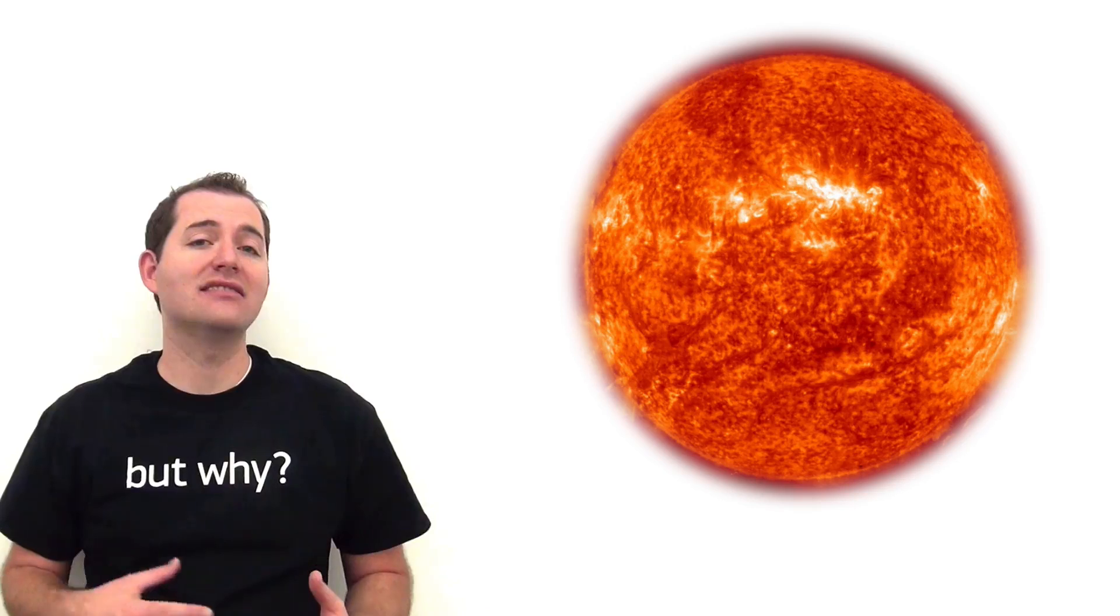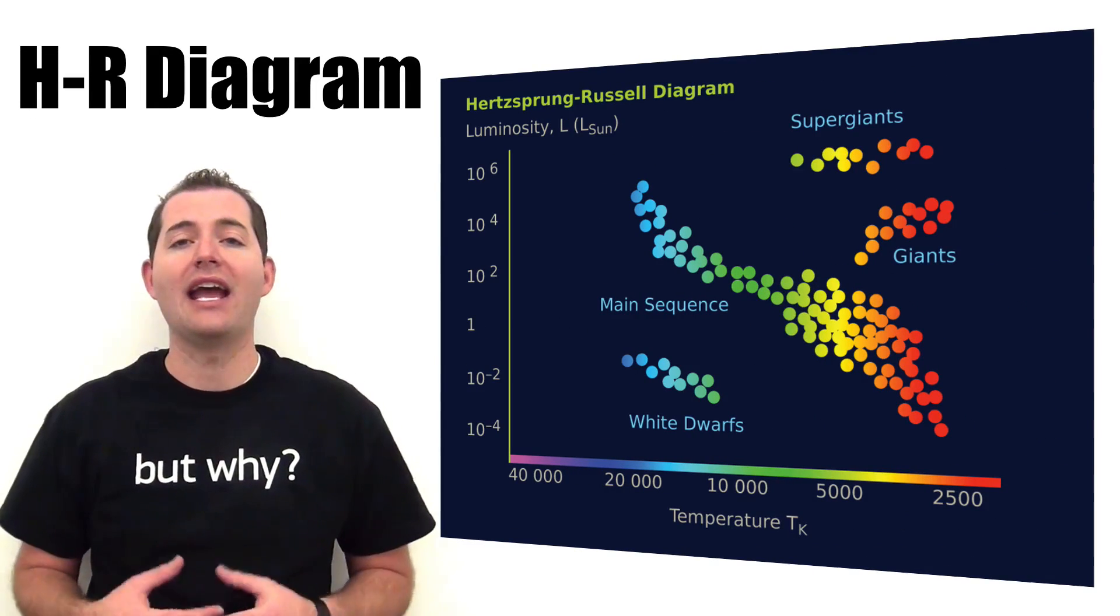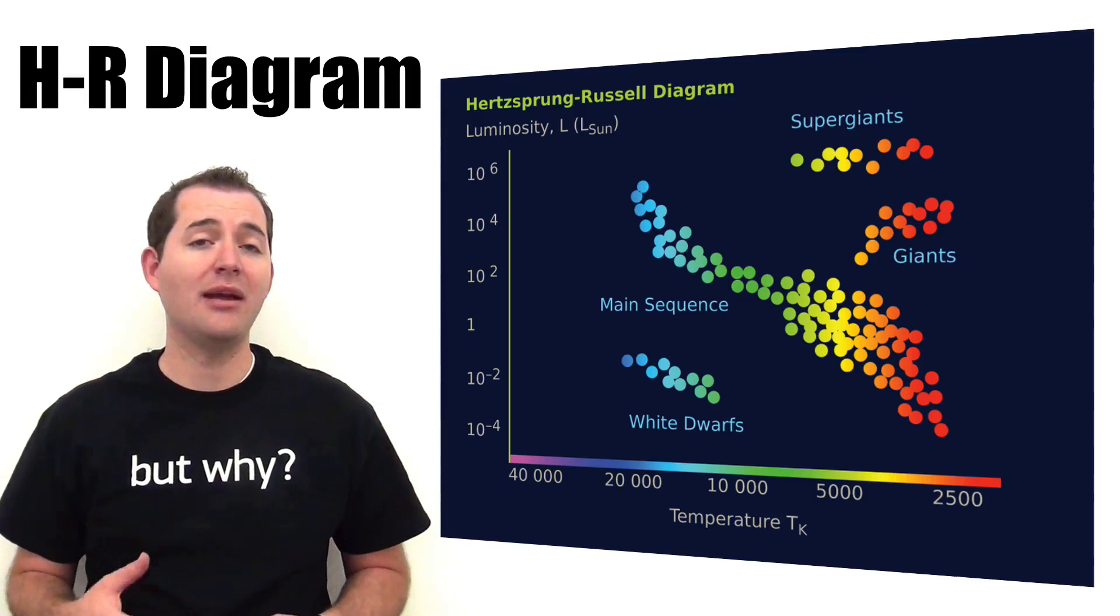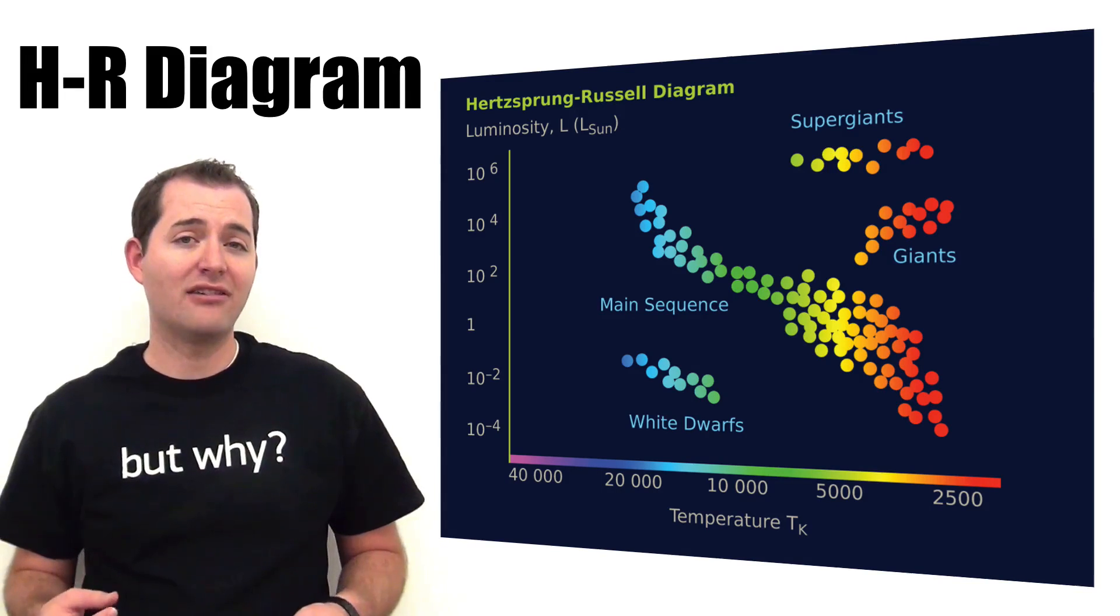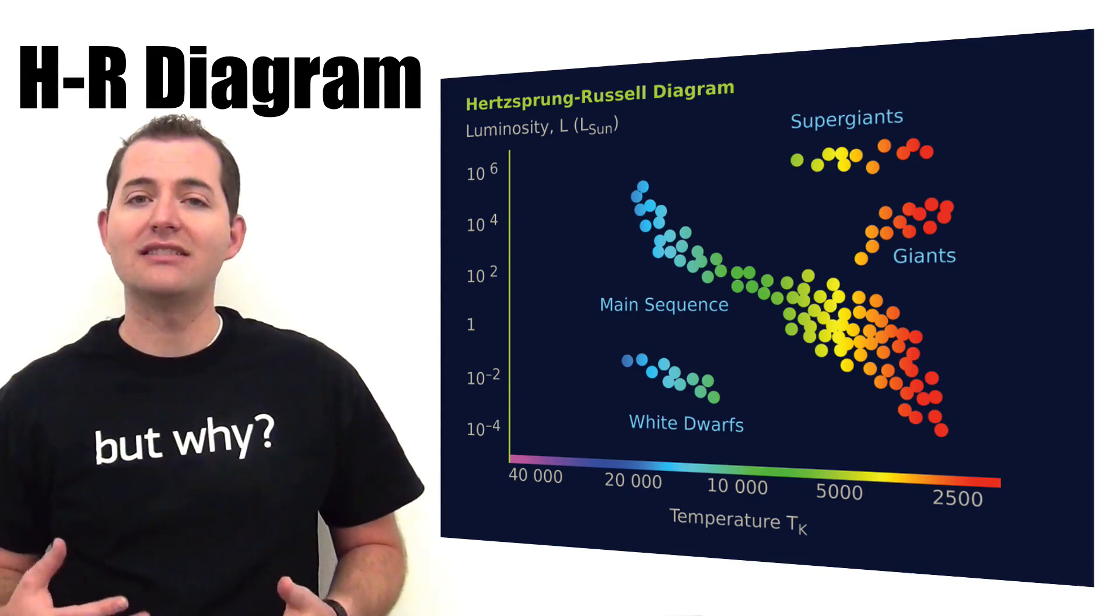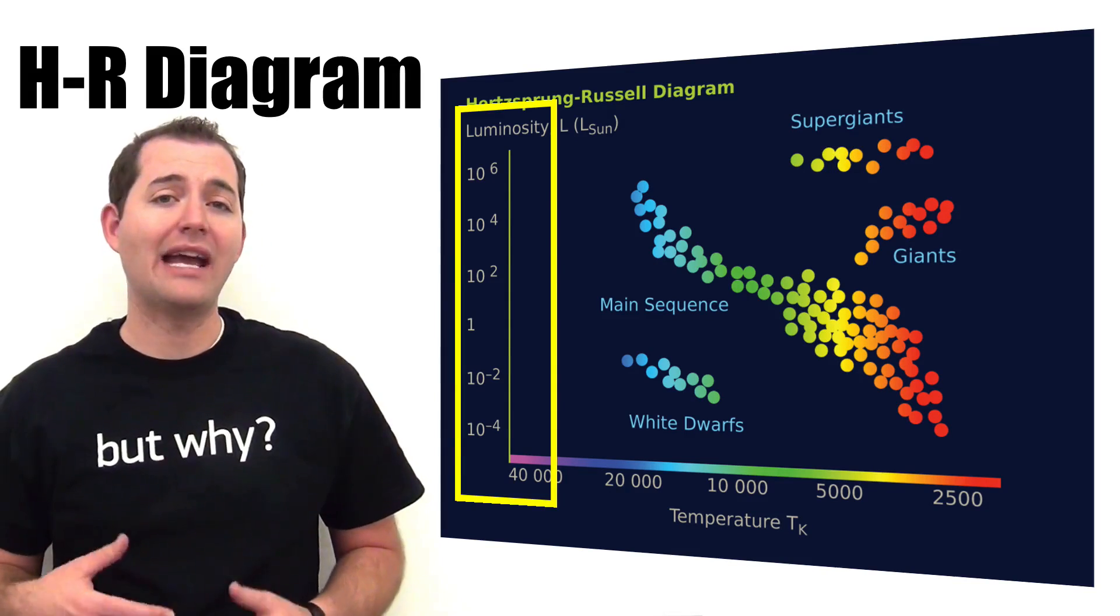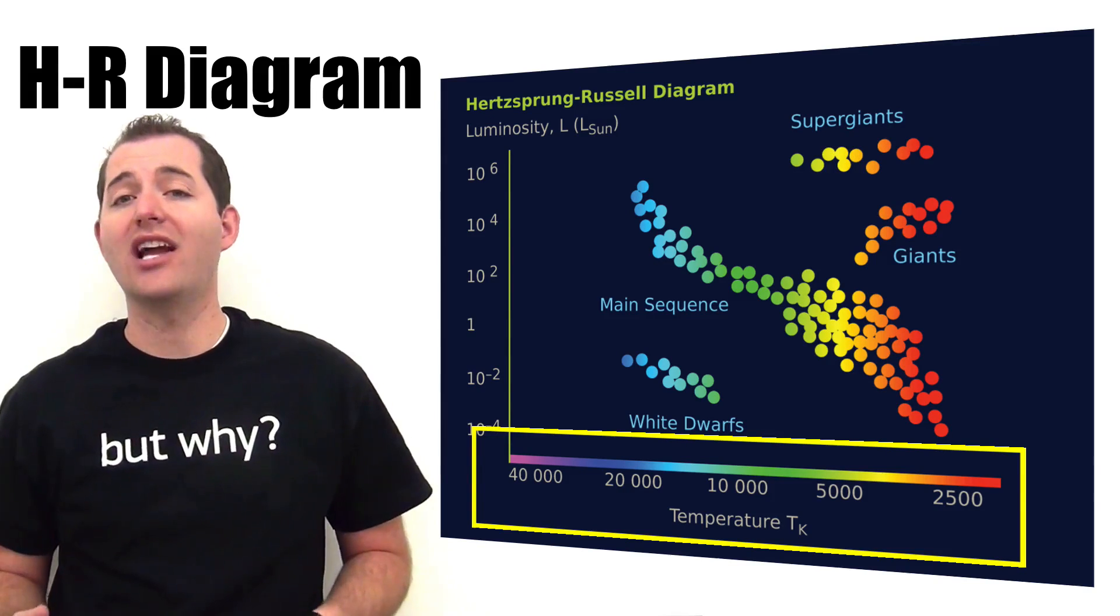As the sun in the center of our solar system begins this fusion process, it becomes what's known as a main sequence star. To explain this, we're going to look at what's called the HR diagram. HR stands for Hertzsprung-Russell, which is the name of two people who developed this model. The Hertzsprung-Russell diagram is a scatterplot of all the different types of stars. On its axis it shows the luminosity or absolute magnitude of stars and the temperature of stars in Kelvin.